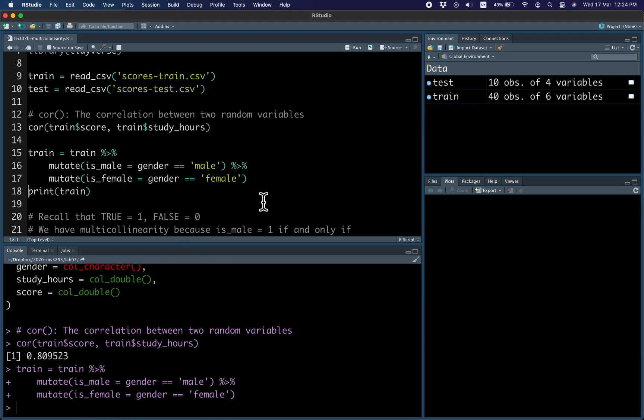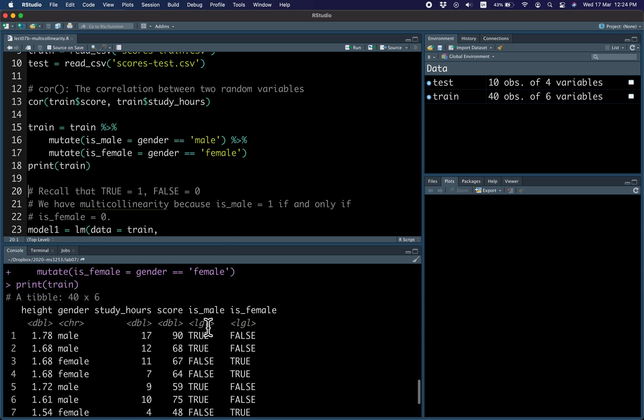Here's where I define the columns is_male and is_female, which are always opposites, obviously.